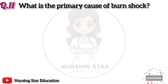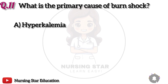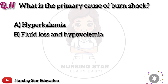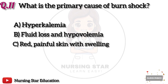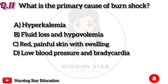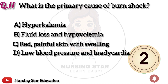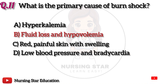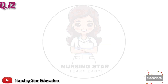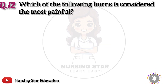Question 11: What is the primary cause of burn shock? Option A: Hyperkalemia. B: Fluid loss and hypovolemia. C: Sepsis. D: Electrolyte imbalance. The correct answer is B: Fluid loss and hypovolemia.